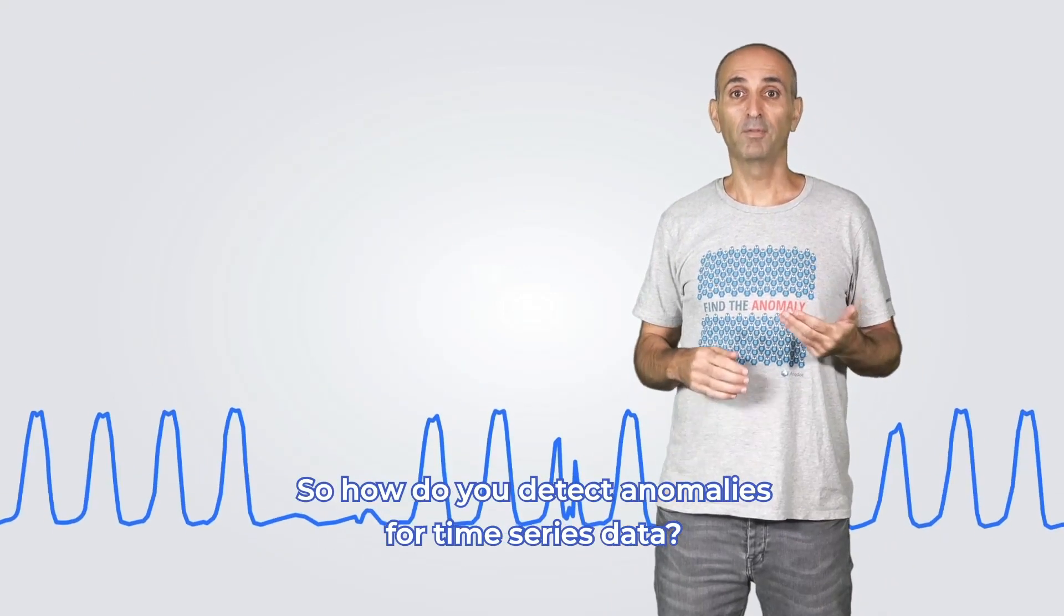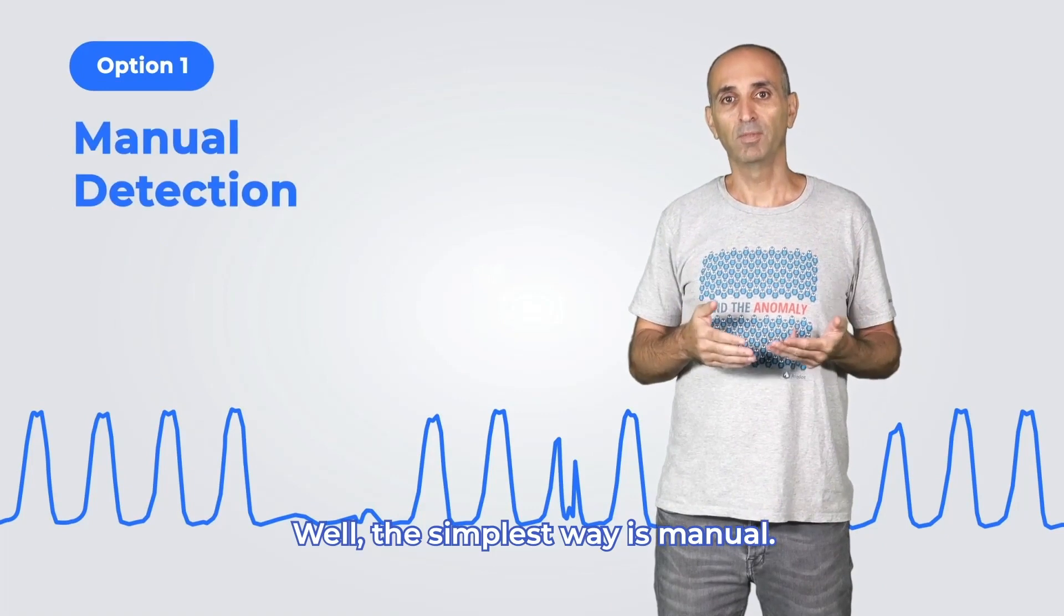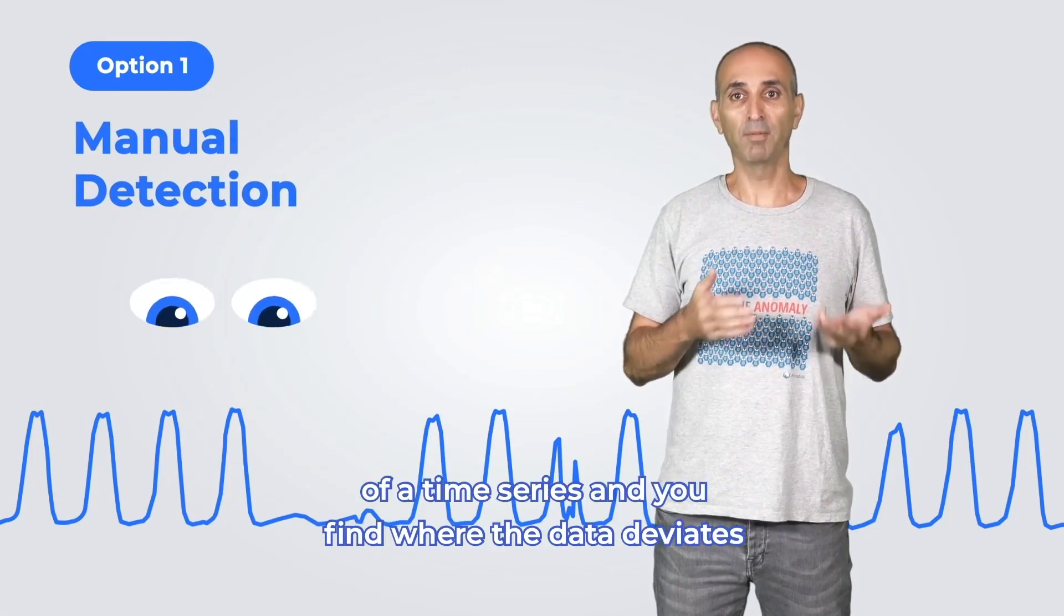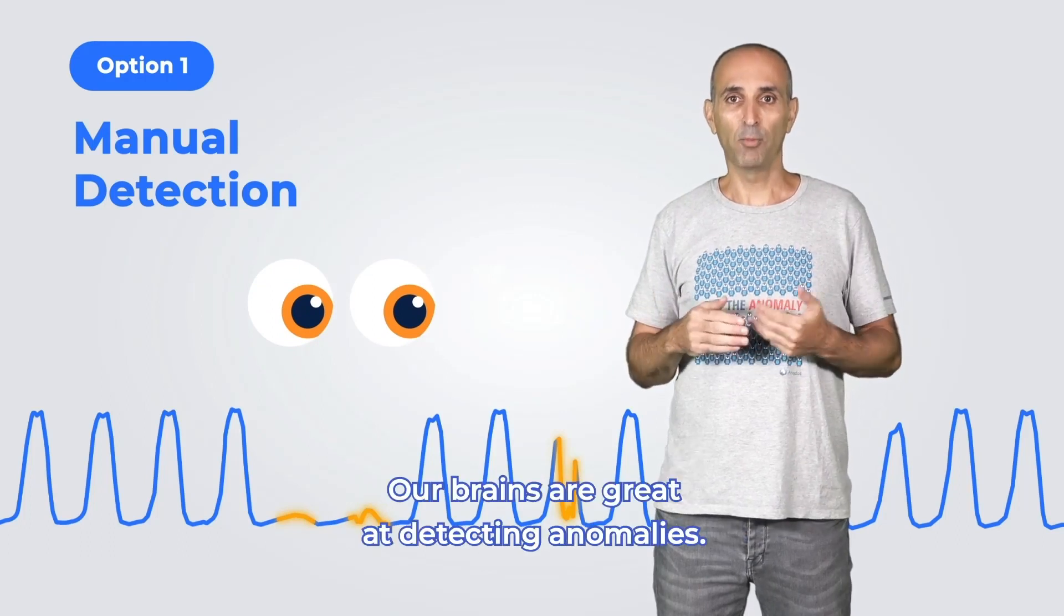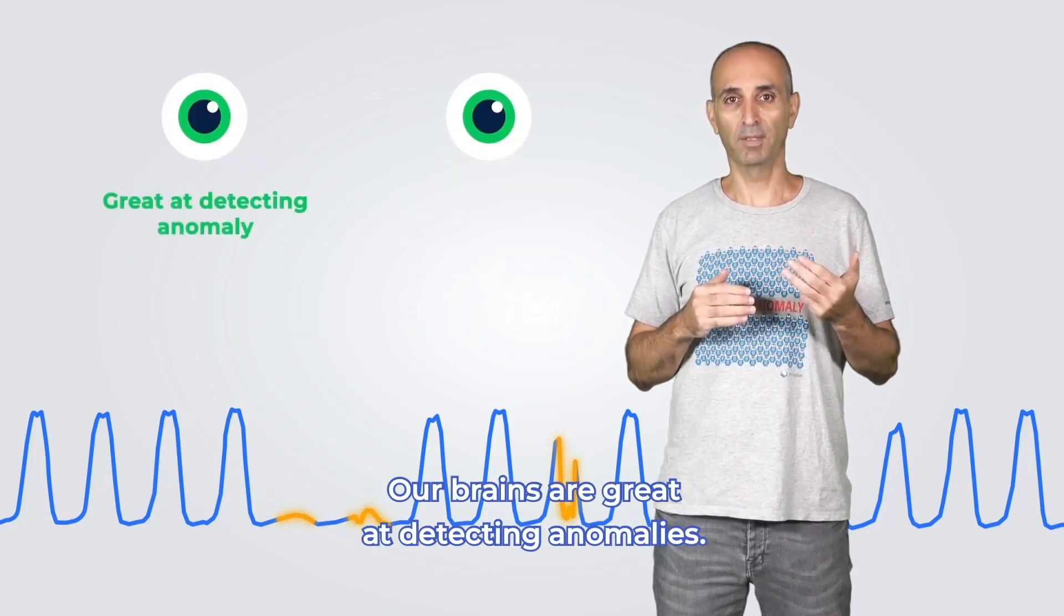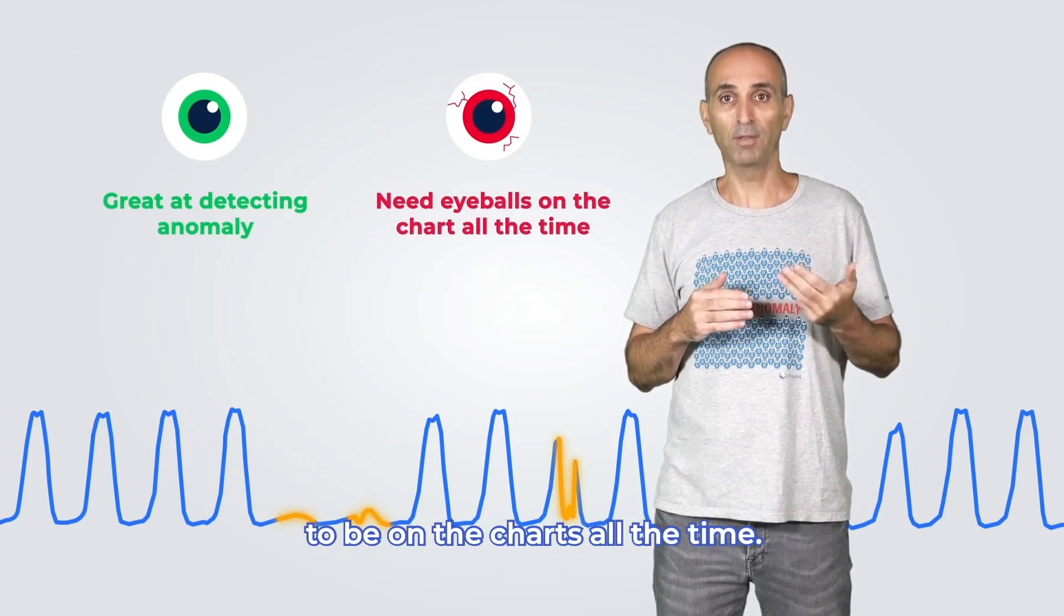So, how do you detect anomalies for time series data? Well, the simplest way is manual. You look with your eyes at a chart of a time series and you find where the data deviates from the pattern. Our brains are great at detecting anomalies, but you need the eyeballs of a person to be on the charts all the time.